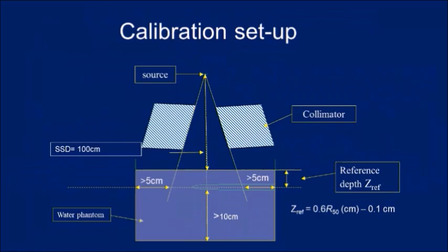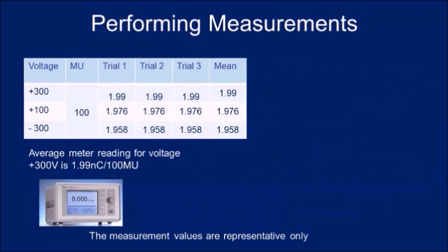For the absorbed dose measurement setup, position the chamber at Z_ref calculated for each energy. Ensure the phantom extends at least 5 cm beyond the field size on all sides, and preferably 10 cm below the chamber. Perform three trials at the clinically used MU. Measurements are done at three voltages: +300 V (as used during SSDL calibration), +100 V (reduced voltage to determine recombination correction), and −300 V (for polarity correction). Three measurements are taken at each voltage and averaged.